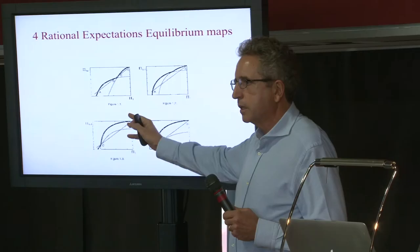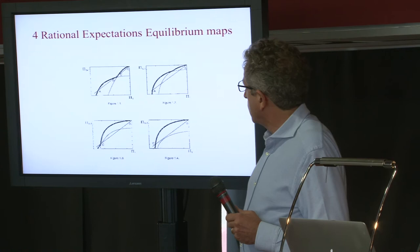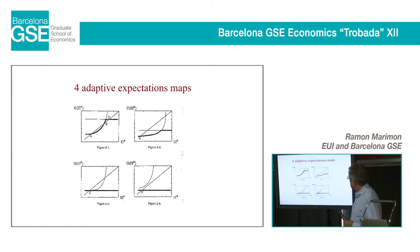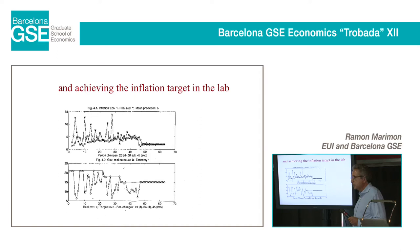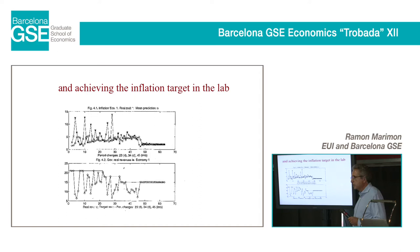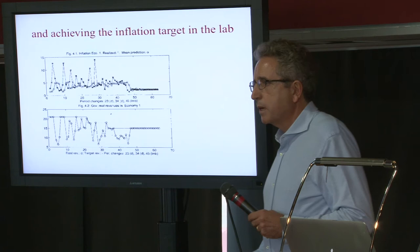In a rational expectations equilibrium model, imposing a fiscal constraint actually makes things worse. However, with adaptive expectations — when people just look at the past to figure out the future — it's the other way around. We can show this directly in the experiment: by tightening the deficit constraint slightly, you target exactly where you want to go. So that's a case where fiscal policy works, and we can figure it out in the lab in a way that's difficult to do otherwise.